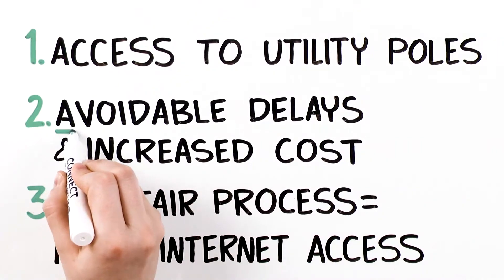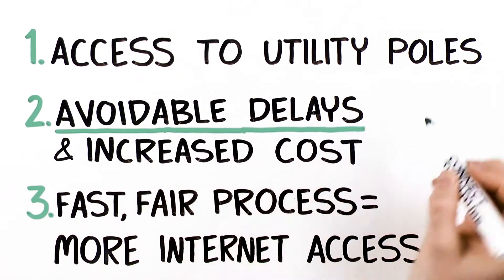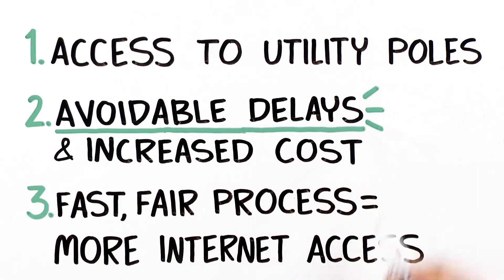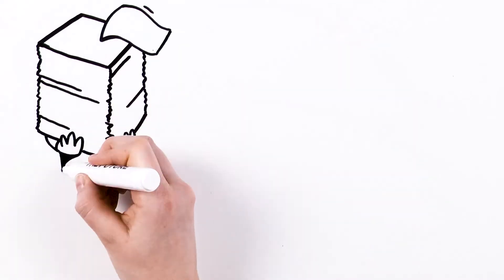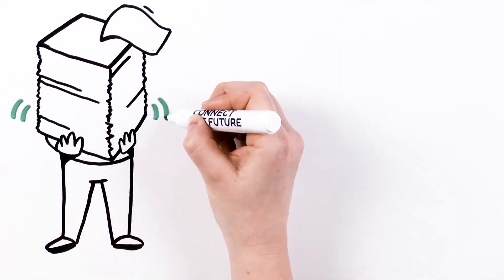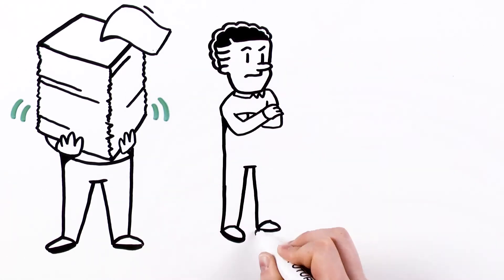Getting access to utility poles sounds simple enough, but it often causes avoidable delays and increased costs. Why? Pole attachment procedures, laws, and regulations vary wildly and are hard to enforce. Sometimes rules don't even exist.